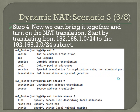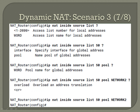Step four: bring it all together and turn on NAT translation. Start by translating from the 192.168.1.0/24 to the 192.168.2.0/24 subnet. Using IP NAT inside source, we reference a list since we created a group of IPs. The command is: IP NAT inside source list 50 pool NETWORK2. We're not using overload here.